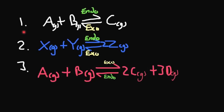Pause the video and try to work out the following questions: for reactions 1, 2, and 3, what would happen if I increased the temperature and what would happen if I increased the pressure? For question 1, if we increase the pressure, the equilibrium will shift to the side with the least number of gaseous moles. As we have two gaseous moles on the left side and one gaseous mole on the right side, increasing the pressure will shift to the right-hand side, forming more of C.